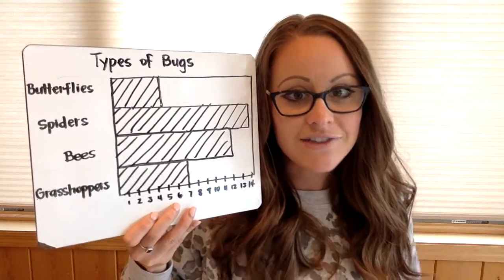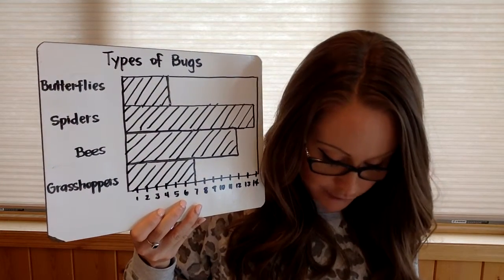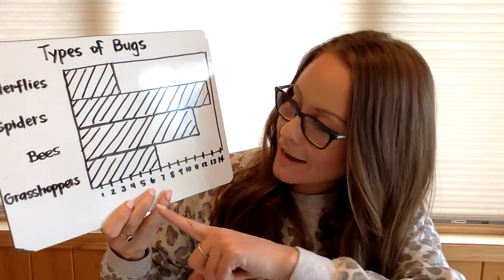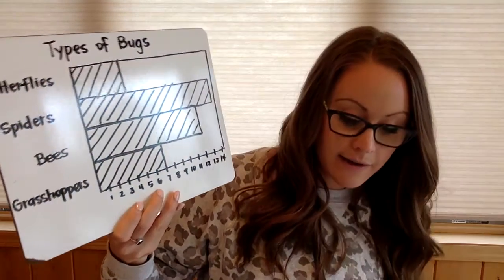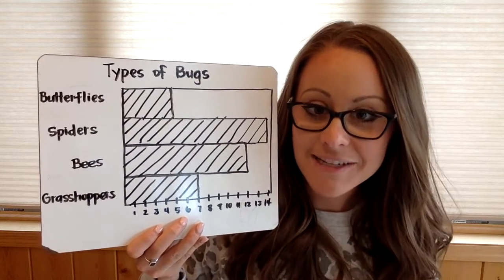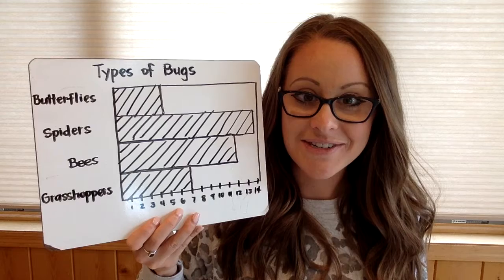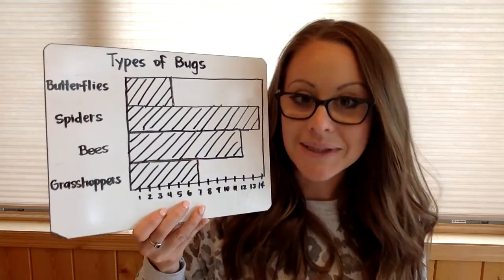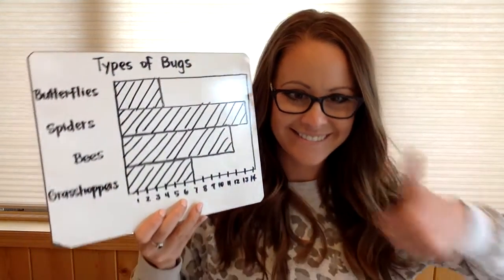Remember, if I'm ever going too fast, just pause me. Letter D: how many bugs did Alice count in the park? You're going to add up all of them — butterflies was 5, spiders was 14, bees was 12, and grasshoppers was 7. Take a minute to add them; you can add two together first. I did 14 plus 12 plus 7 plus 5, and I got 38. Is that what you got?